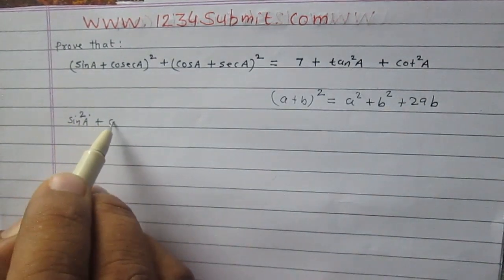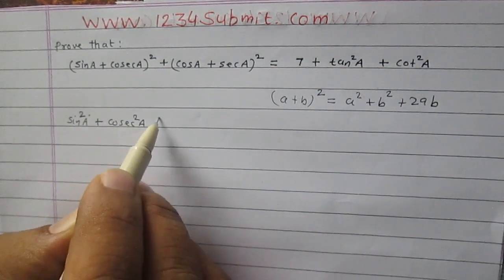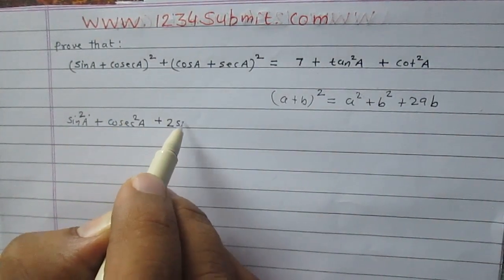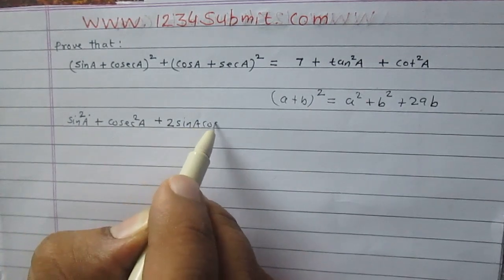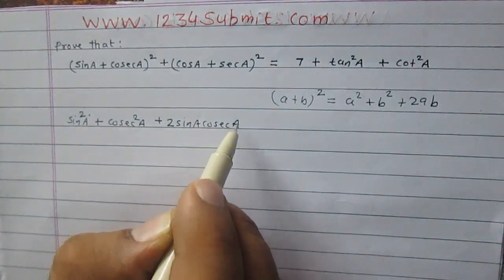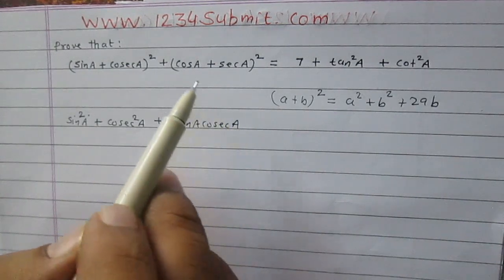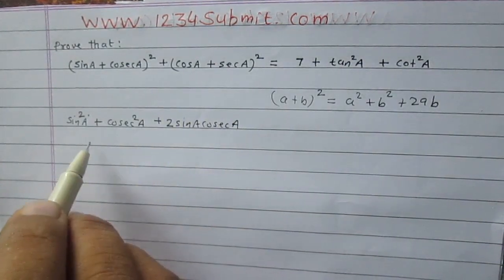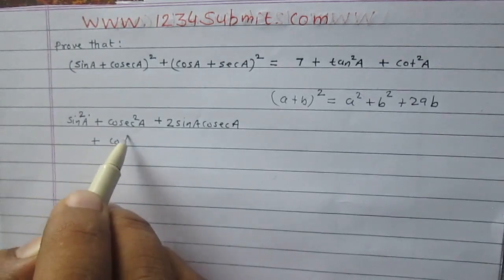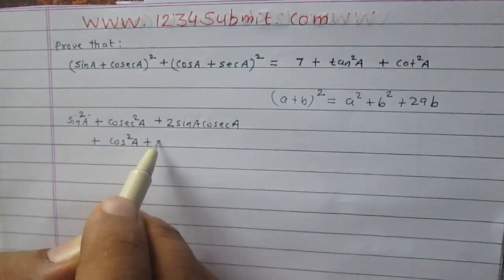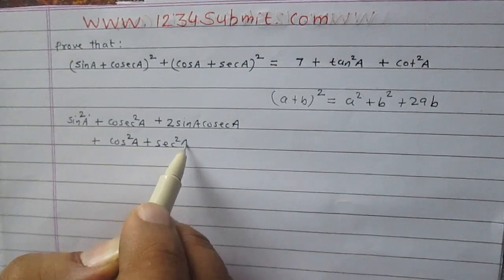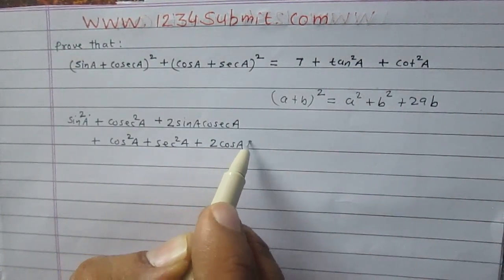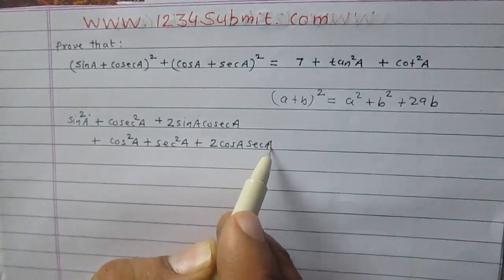Similarly, (cos a plus sec a) whole square can be written as cos square a plus sec square a plus twice of cos a sec a.